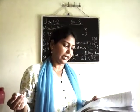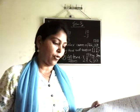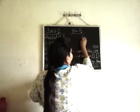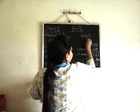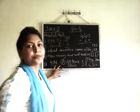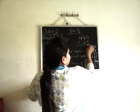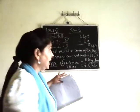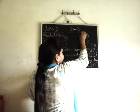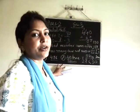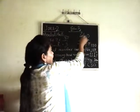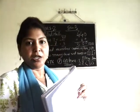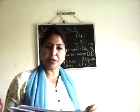The last question of exercise 3: 440 plus 60. Do the simple addition. 0 plus 0 is 0. 4 plus 6 is 10 — write 0 and carry over 1. Then 4 plus 1 is 5, giving 500. So 440 plus 60 equals 500. That completes exercise number 3.